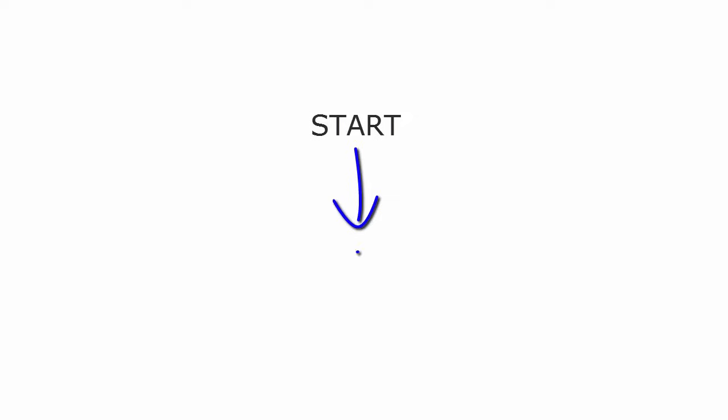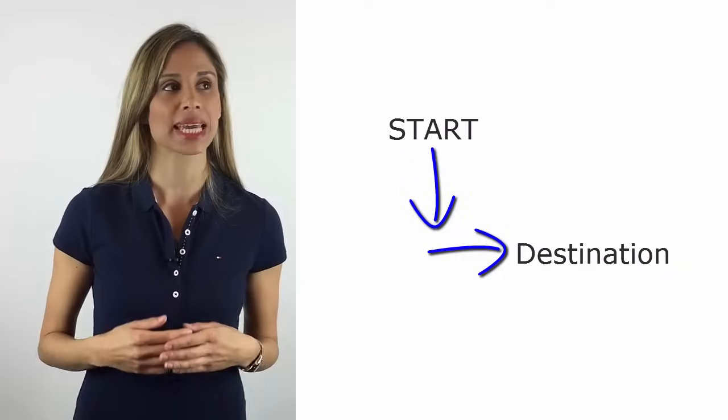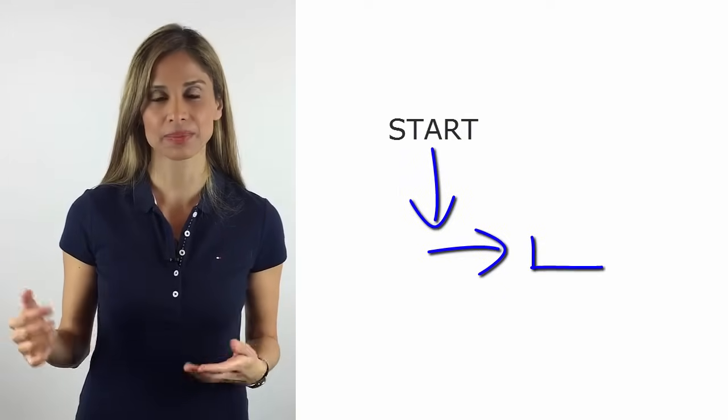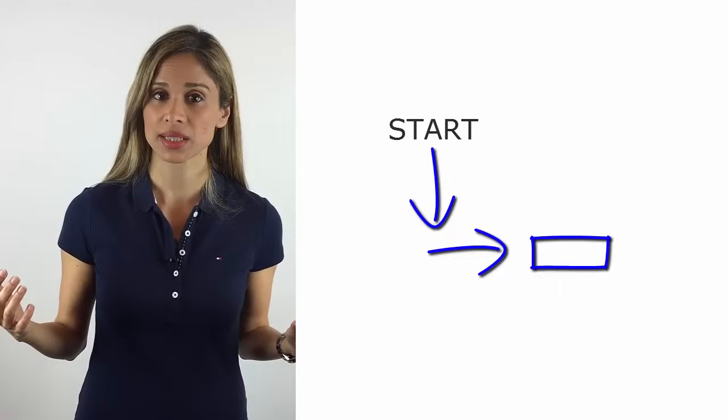Offset is an interesting formula, and it's one that can do so much more than meets the eye. Offset is a way of giving Excel an address to go to. You start off by telling it how many rows to move, and then how many columns to move to get to its destination. This destination can be a single house, like a single cell, or it can be a street.